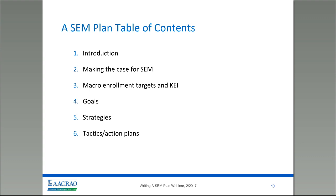In terms of the actual SEM plan and structure, let's talk about the basic template. What's included? Obviously, an introduction — this is really a roadmap for how the institution responds to planning for recruitment, retention, and completion. This is your purpose, the relevance for why you're doing what you're doing. Making the case for SEM — the justification for why you're going to go through this pretty intense work. There's a lot of information you need to bring to tell the full story. Then looking at enrollment targets: high-level key enrollment indicators, goals, strategies, and tactics. From the highest level — the basic target such as improving recruitment — the goals that follow, the strategies, and then the tactics with the actual action plans with metrics attached.